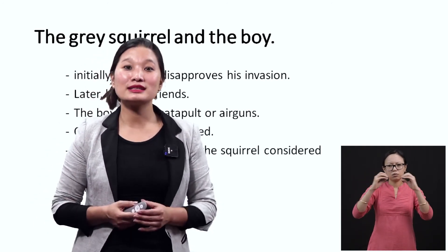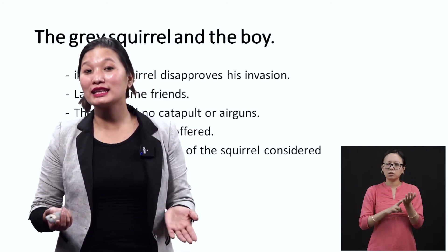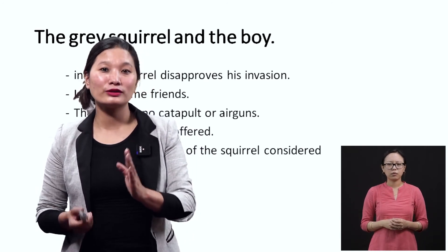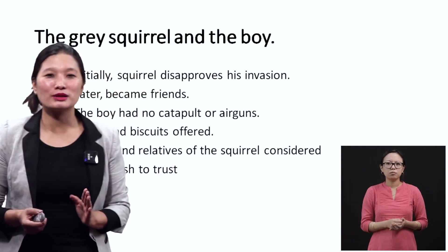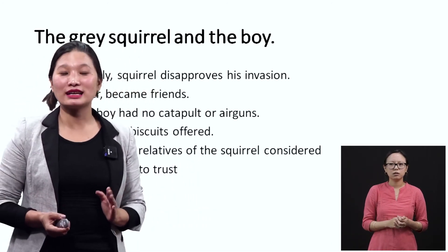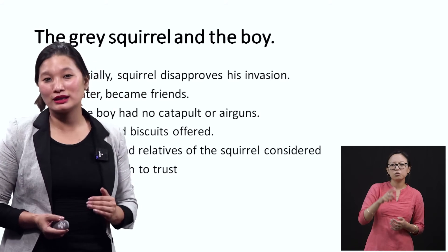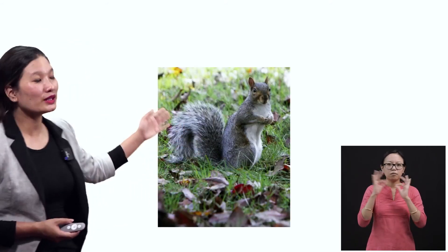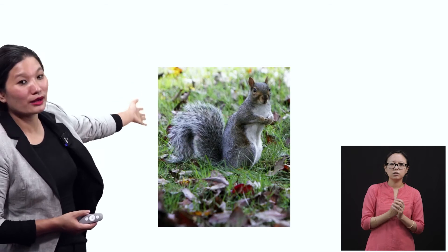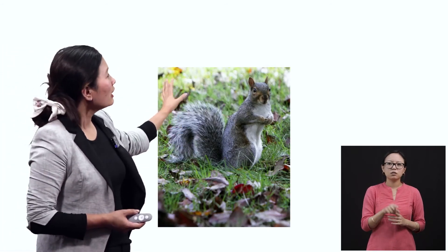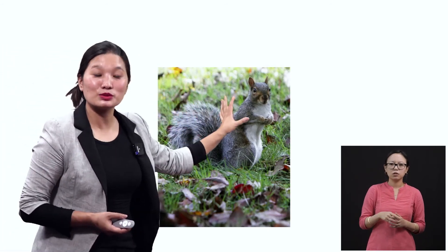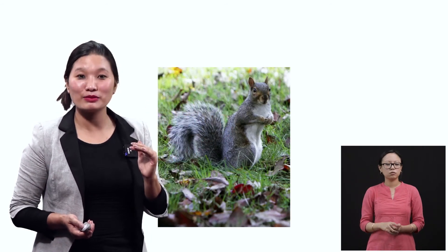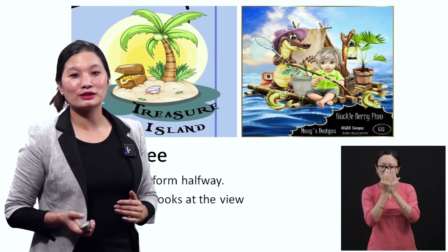The parents and relatives of the squirrel considered him foolish to trust humans. Just as your parents might warn you about a dangerous friend, the squirrel's family was scared that the boy would one day harm him. They said it was foolish of the squirrel to trust human beings, because humans are capable of hunting animals.